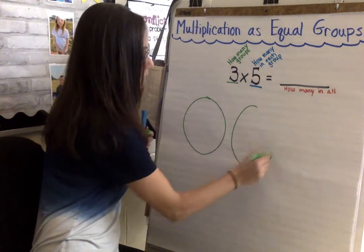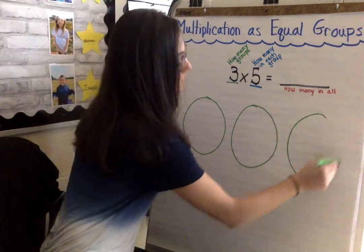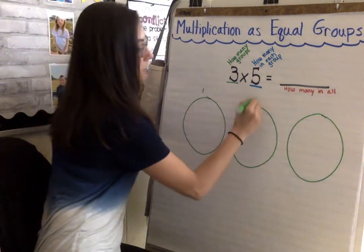One, two, three. So we have one, two, three groups.